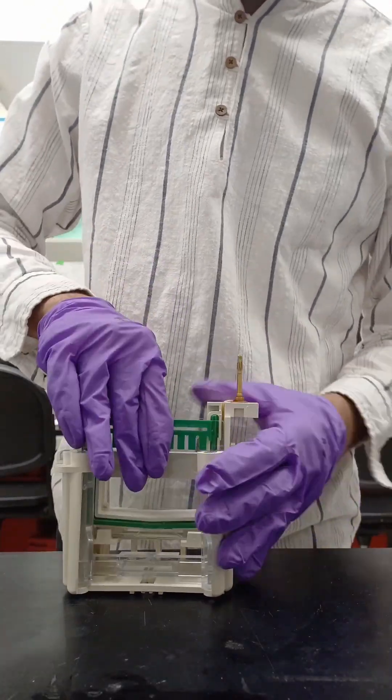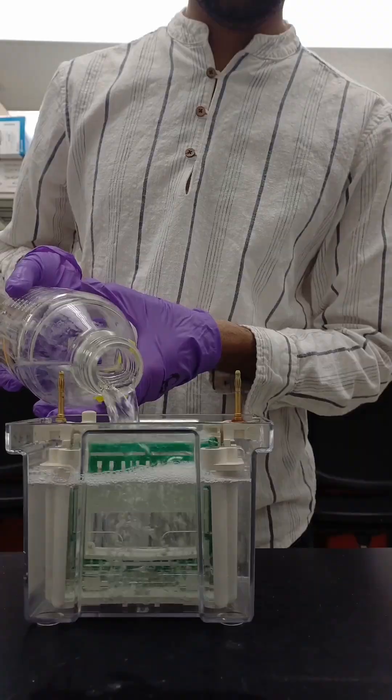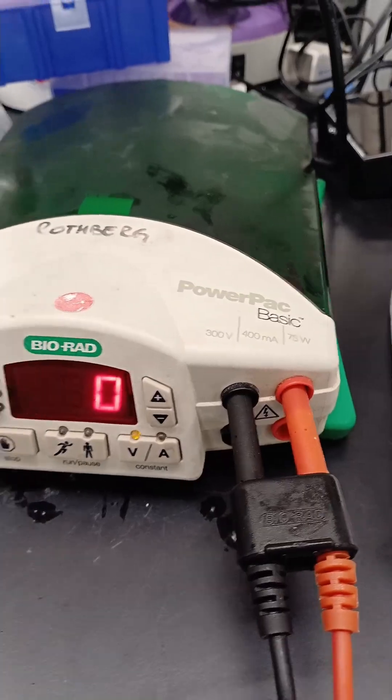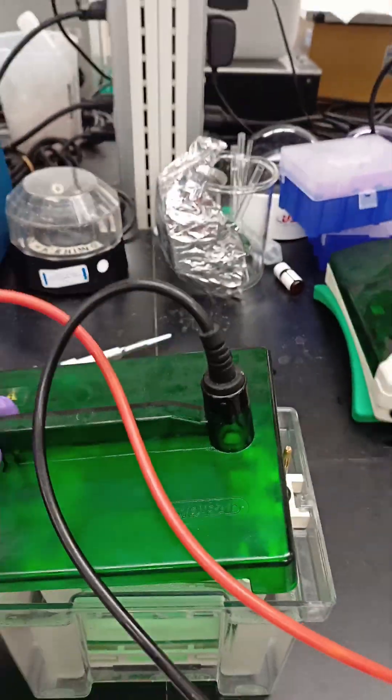Once solidified, set the gel in the tank and fill it completely with SDS running buffer. Load your samples carefully. Before you start, double check your wires red to red, black to black.